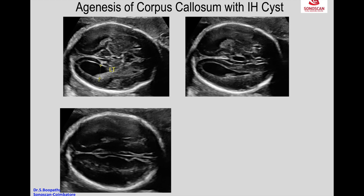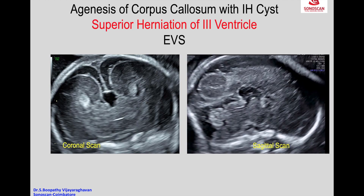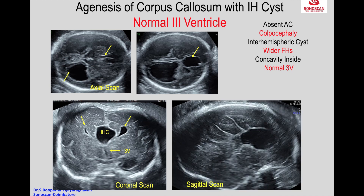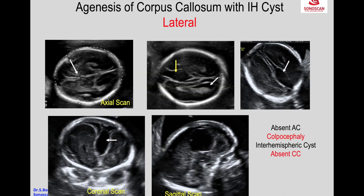Now you see another fetus with ACC but with an interhemispheric cyst. In the coronal scan, the corpus callosum is absent and you see the third ventricle which is herniating and ballooning out in the midline, forming the interhemispheric cyst — which can also happen without herniation of the third ventricle. The midsagittal scan confirms that the corpus callosum is absent and there is an interhemispheric cyst.